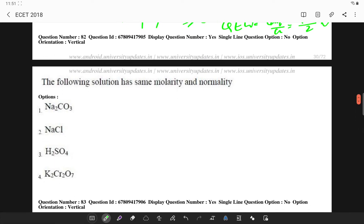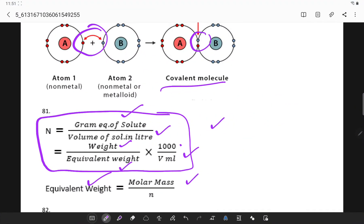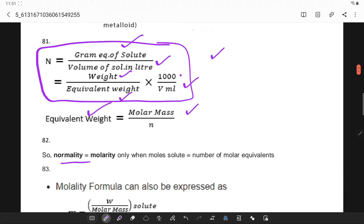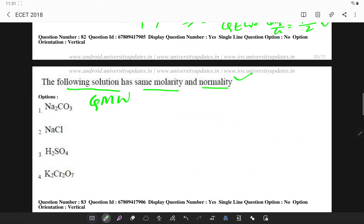Which of the following solution has same molarity and normality? We have to calculate the GMW and equivalent weight. Normality is equal to molarity when moles of solute is equal to the number of molar equivalents. In this case, for Na₂CO₃, if you calculate the GMW it will be 2 times 23 plus 12 plus 3 times 16, the sum is 106.